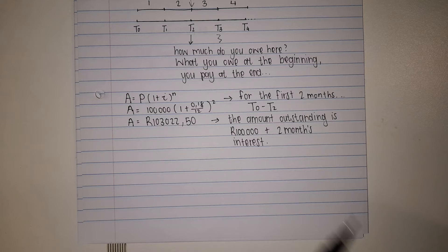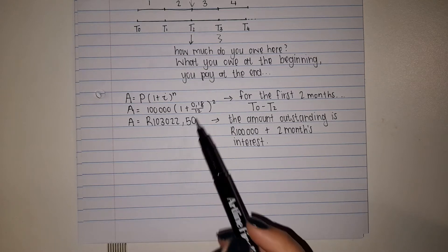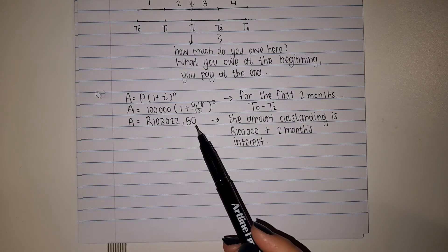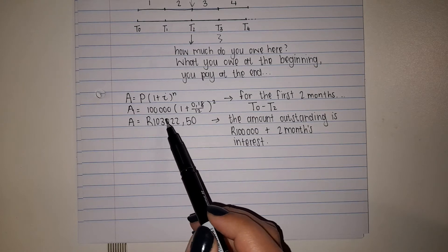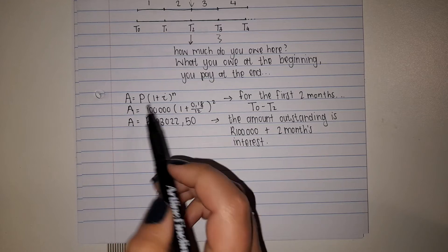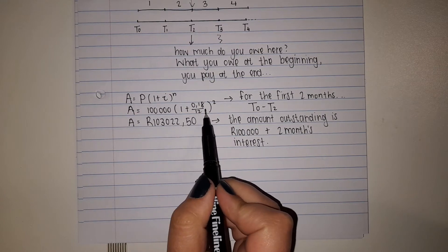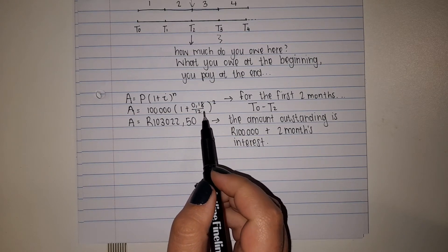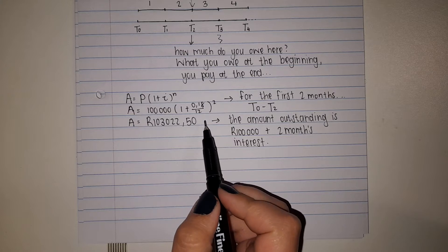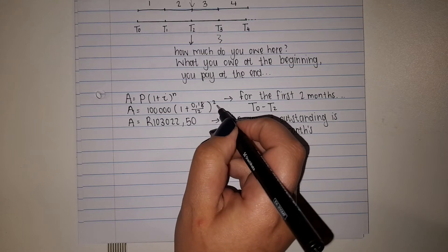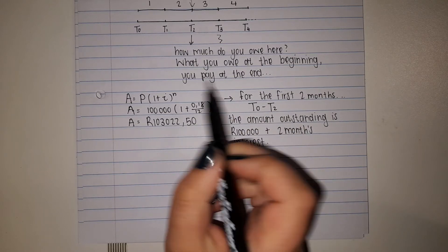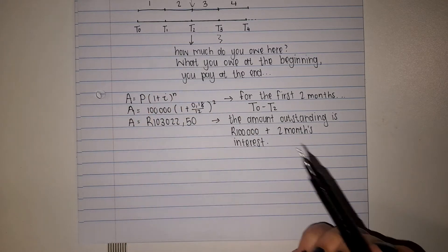That is our original compounded formula, nothing fancy. Over here we substitute in our first loan which is 100,000 with our interest rate of 18% per annum compounded monthly and for two months because it's the first two months that we need to calculate.